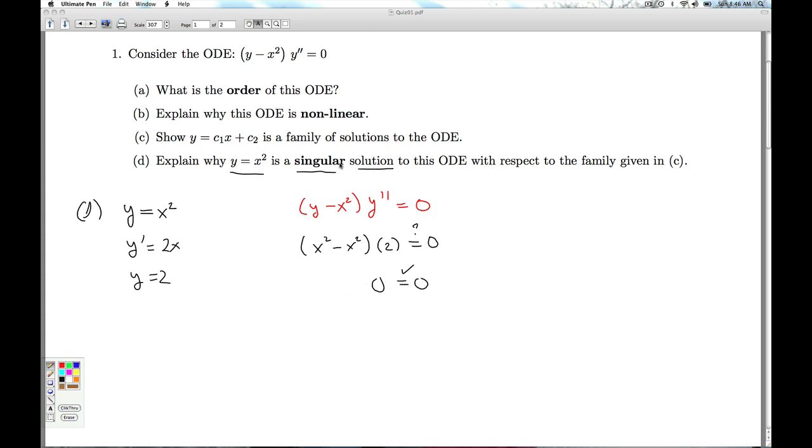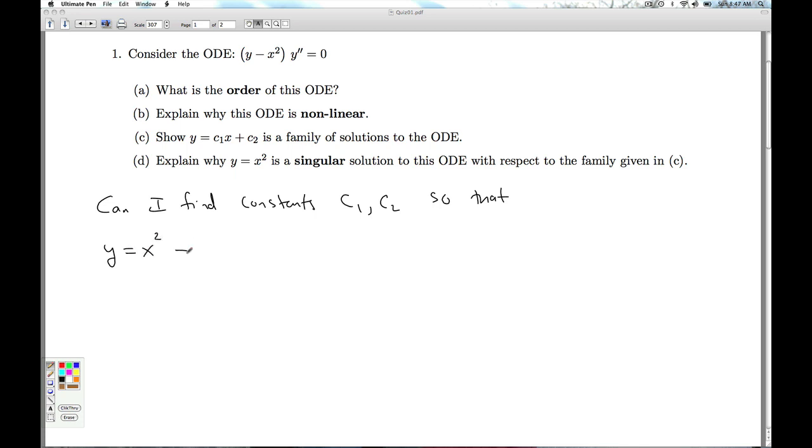Now we need to attack this concept of singular. Now the way they define the singular solution in our book, it's always with respect to a given family of solutions. So the family is given in C. So this is a two-parameter family of solutions. So what makes y equals x squared singular? Well, can I find constants C1 and C2 so that y equals x squared equals one of the members of this family?